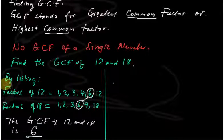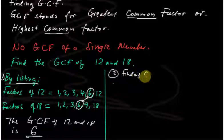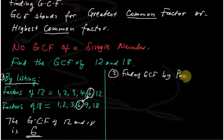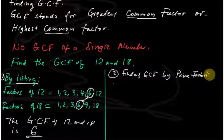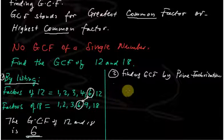That was the first method — listing. The second method is finding the GCF by prime factorization. We write the two numbers and split them into their prime factors.